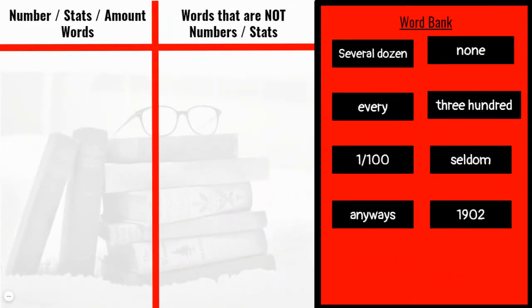On this slide is a sort. Look at the examples in the red box. Which ones represent numbers or amounts and which ones do not? Drag the black boxes into the correct category. Pause the video and complete the slide.